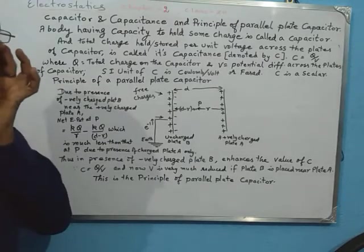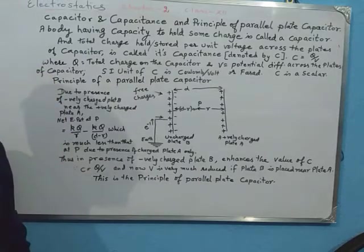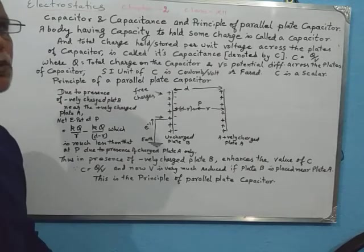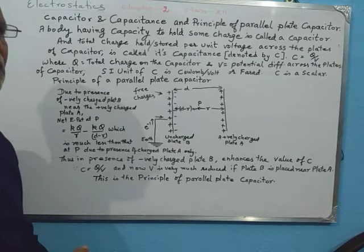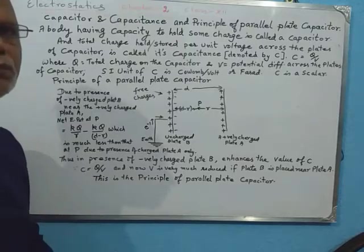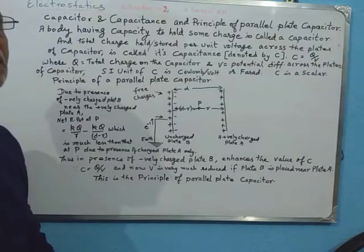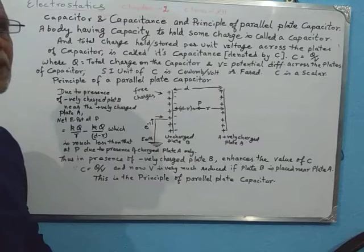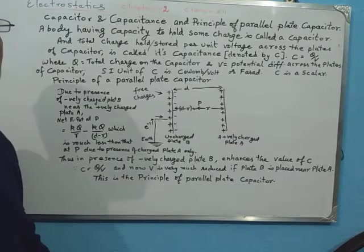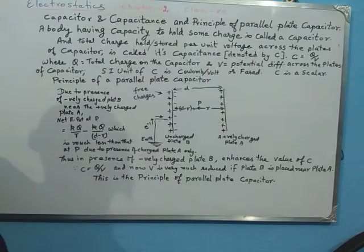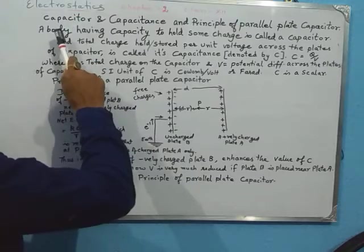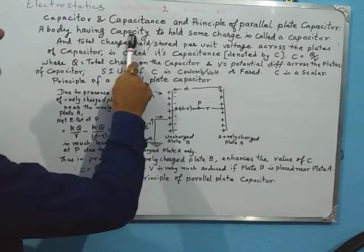There will be some repulsion between the charge particles, but the molecules of the material keep them from leaking through the environment. However, once we start accumulating more and more charge on the plate, the capacity to hold the charge is lost, and then the charge may be lost to the environment or to the earth.